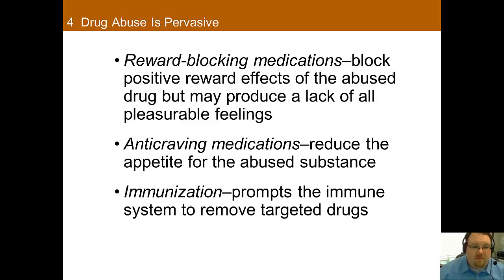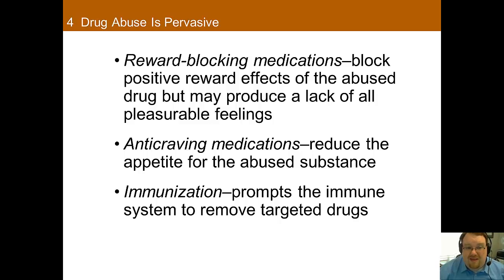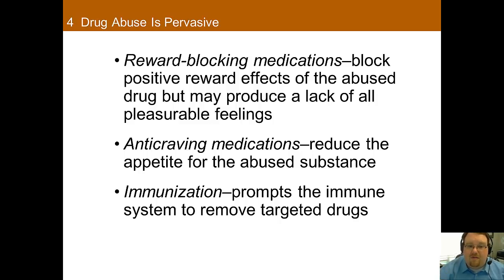Researchers have been looking at ways to block the mesolimbocortical reward system. However, the downside is it would create a complete lack of pleasurable feelings, which would not be an ideal solution. Drugs that block cravings have also been created to help reduce the urge to use, though if the drug is being used for pleasure, that doesn't help very much. Lastly, immunizations are being developed to have the body's immune system remove targeted drugs from the bloodstream before they ever reach the brain, though the flip side is that there are times these substances are medically necessary, so having immunity to them would be a real problem.